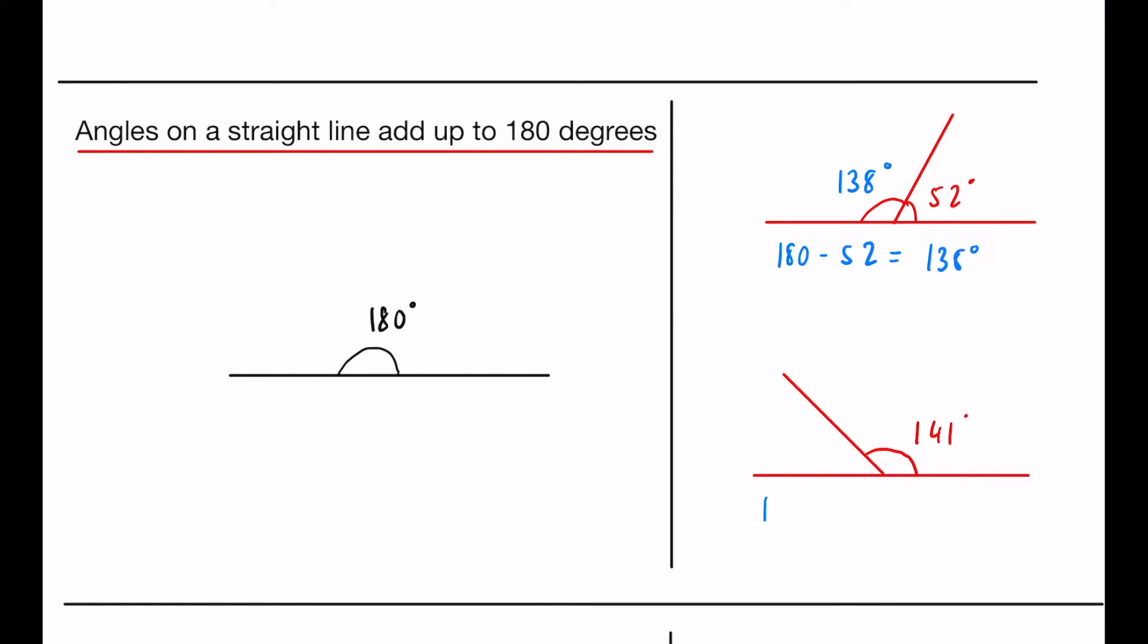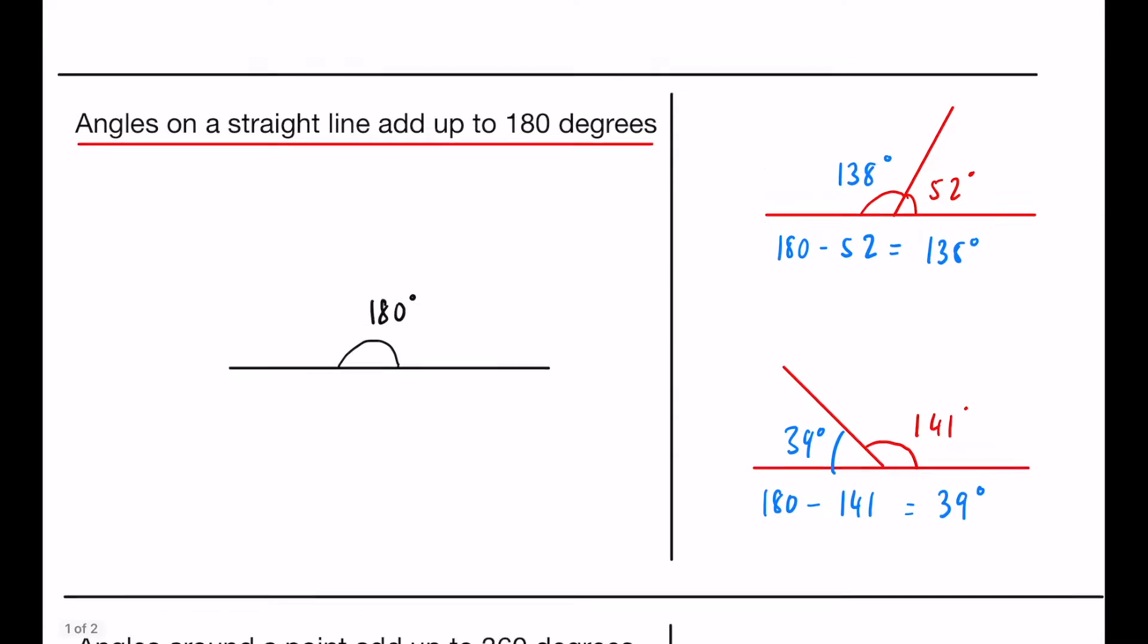Likewise with this second one, we would have to do 180 take away 141, and that's going to be 39 degrees for that. So nothing too complicated. You might have an extra line in there, so you have to add them up and then take it away from 180, but the same concepts will apply.